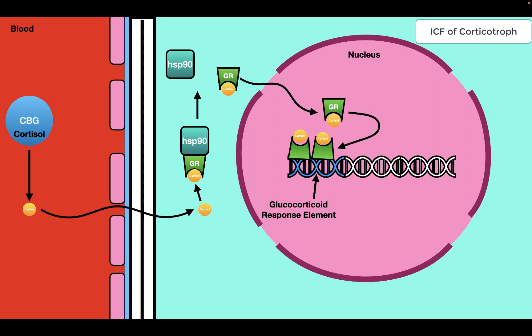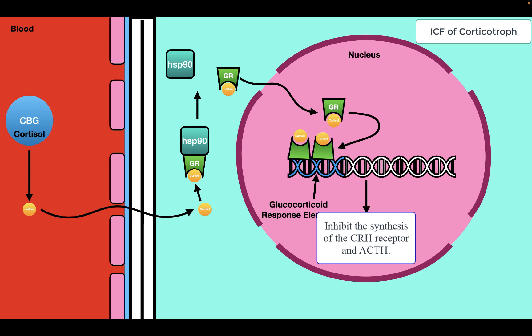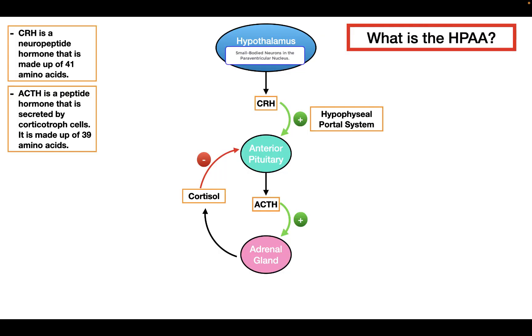The effect of cortisol on the corticotroph is to decrease the expression of the CRH receptor and ACTH. By decreasing CRH receptor expression, cortisol reduces corticotroph sensitivity to CRH, making it more difficult for CRH to stimulate ACTH release. Cortisol also decreases ACTH expression and decreases the release of pre-synthesized ACTH stored in vesicles. In summary, cortisol decreases ACTH synthesis and release from the corticotrophs in the anterior pituitary.